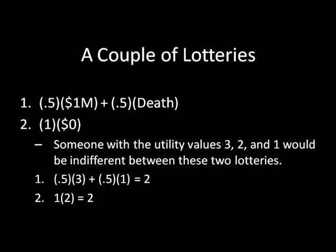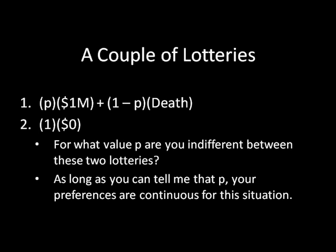One thing that should be pretty obvious is that this is an abnormal person. Most people would have a very, very high value here before they are indifferent between these two lotteries, rather than being willing to accept death half the time just to win a million dollars the other half of the time. So one thing I'd like to ask you is: what is your p-value necessary for you to be indifferent between these two lotteries? If I replaced it so that you win a million dollars with probability p and you die with probability 1 minus p in the first lottery, and you get nothing in the second lottery — essentially going on living your normal life — for what value of p are you indifferent between these two lotteries? As long as you can tell me that value of p, your preferences are going to be continuous for this particular situation, and I think most people are going to respond with essentially continuous preferences.